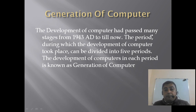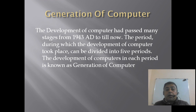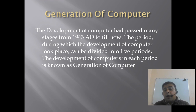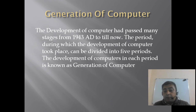What do you mean by generation of computer? The development of computer had passed many stages from 1943 AD to till now. The period during which the development of computer took place can be divided into five periods. The development of computers in each period is known as a generation of computer.